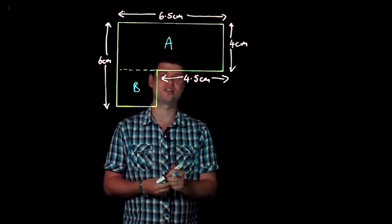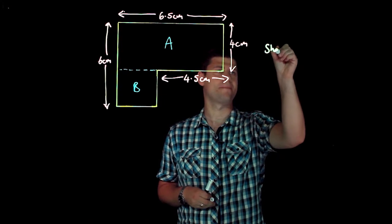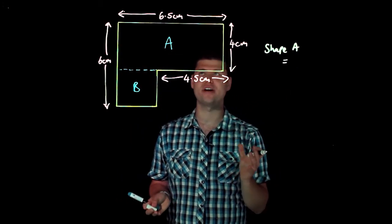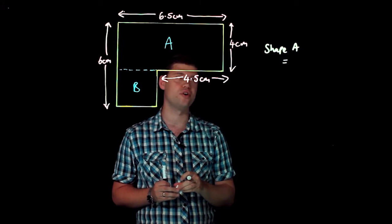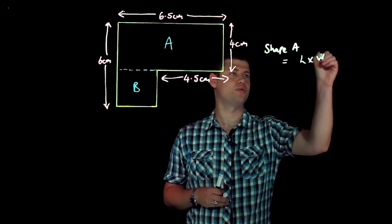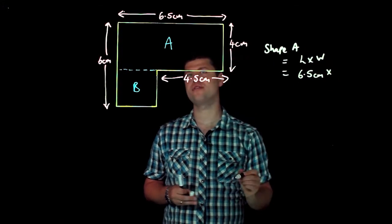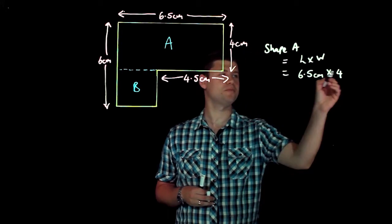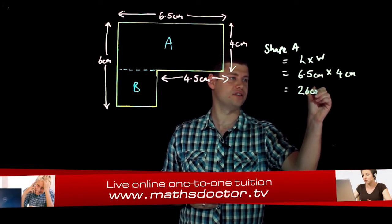Now shape A is the one that's going to be the simplest to work out the area for to begin with because we actually have the necessary lengths for it already. To find the area of a rectangle we multiply the length by the width, and in shape A we actually happen to know the length and the width already. The width of this shape here is 6.5 centimeters and the width is 4 centimeters. So if I multiply those two together then that's going to give me a total area of 26 centimeters squared.